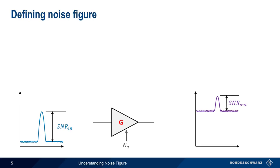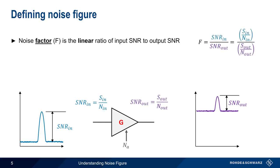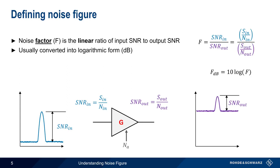We can quantify SNR degradation by calculating the linear ratio of input SNR to output SNR. This is called noise factor and is abbreviated F. Since logarithmic units are much more widely used in RF than linear units, noise factor is then usually converted into logarithmic form, that is, into units of decibels or dB. And this logarithmic form is called noise figure. In the remainder of this presentation, we'll go into more detail about what noise figure is, why noise figure is important, and how noise figure is measured using a spectrum analyzer.